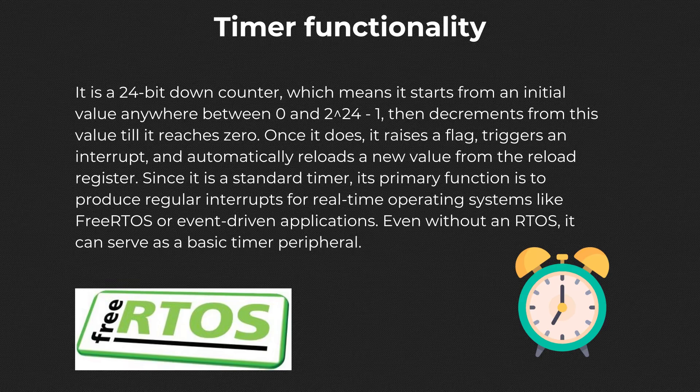It is a 24-bit down counter, which means it starts from an initial value anywhere between 0 and 2 to the power of 24 minus 1, then decrements from this value till it reaches 0. Once it does, it raises a flag, triggers an interrupt, and automatically reloads a new value from the reload register. Since it is a standard timer, its primary function is to produce periodic interrupts for real-time operating systems like FreeRTOS or other event-driven applications. Even without an RTOS, it can serve as a basic timer peripheral — that's how we're going to use it today to build a delay function.